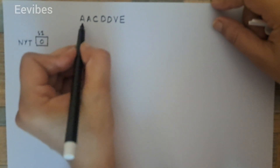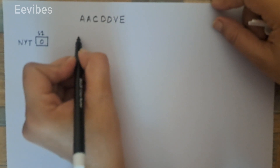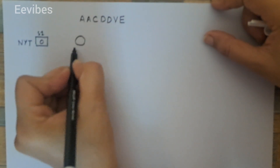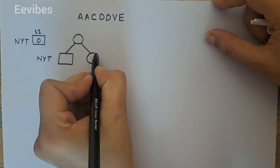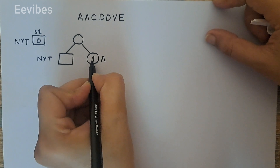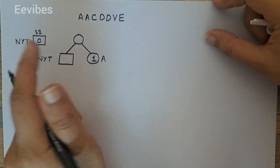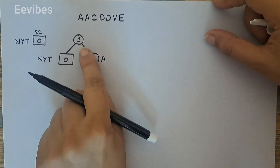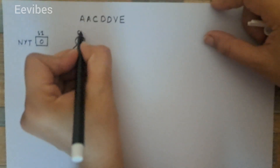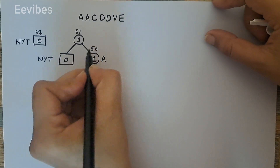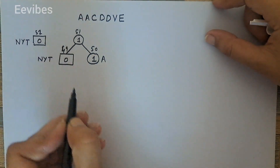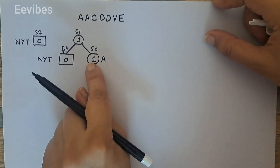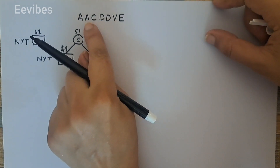When 'a' arrives, the NYT node gives birth to two new nodes: one will be a new NYT node, and the other will be for the symbol 'a' with weight equal to one. The weight of the NYT is zero, so zero plus one equals one. The next step is to assign node numbers: 51 for the root, then moving right then left — 50 and 49.